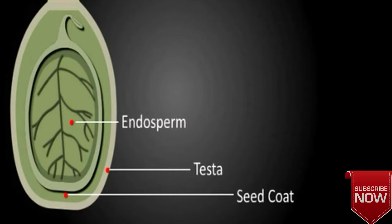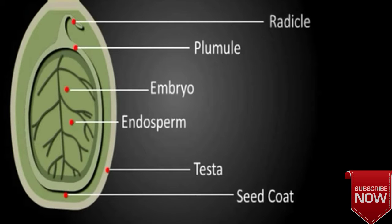Endosperm comprises a major part of the seed and is filled with reserve food. Embryo contains a single lateral cotyledon called scutellum and embryo axis with plumule and radicle at its two ends.